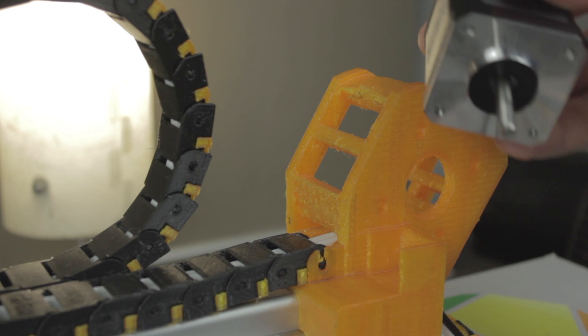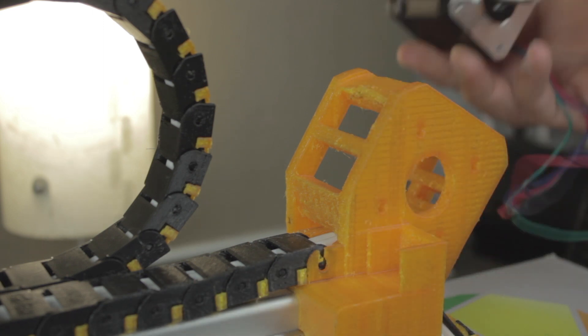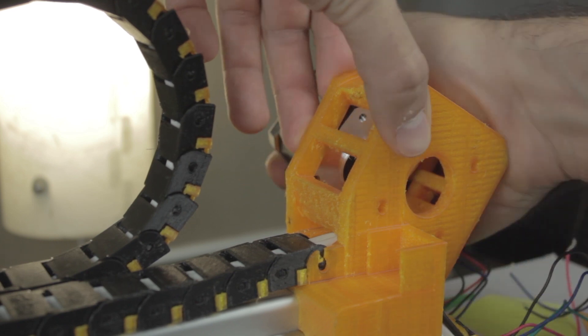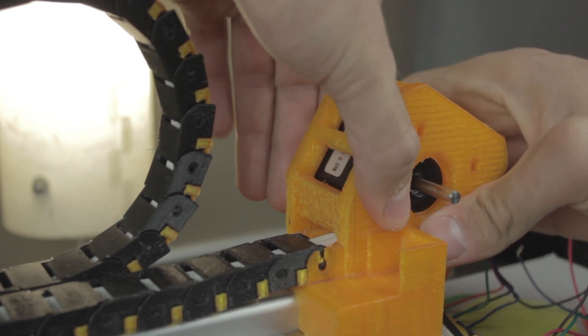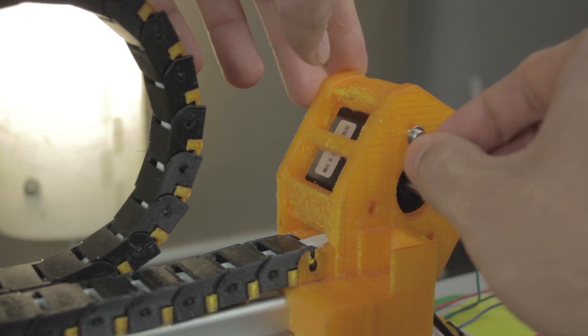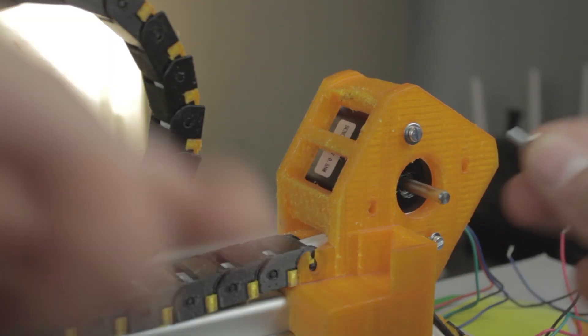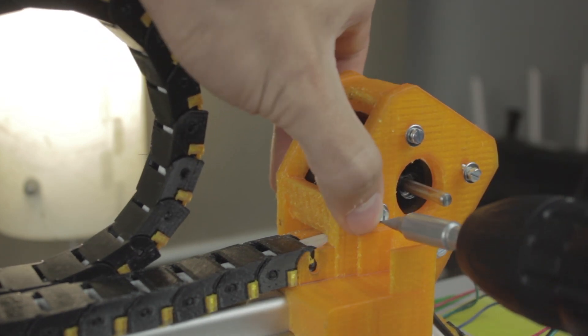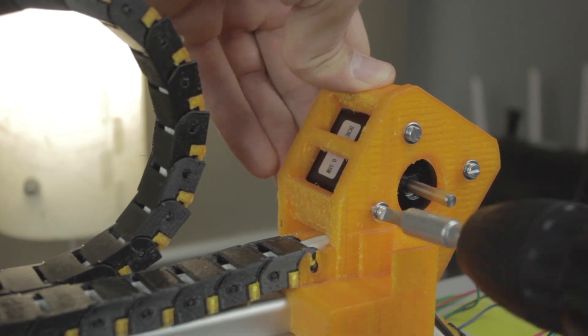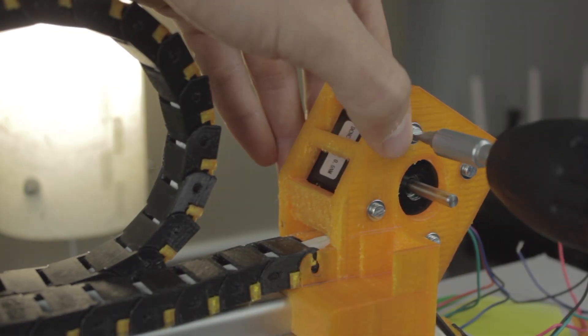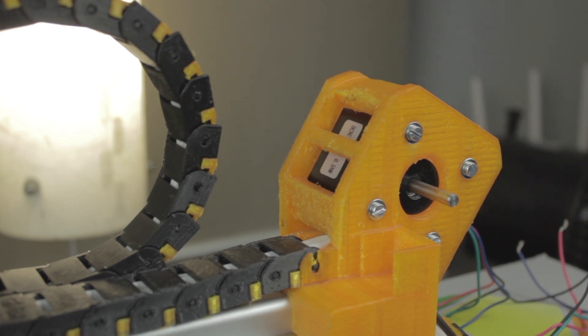So I'm going to start with the right end, and the first step will be to insert the NEMA 17 stepper motor in place. Pay attention to the orientation of the cables, since they should face to the outside bottom of the axis. Then we'll start inserting the M3 bolts with the M3 washers in place, and once all are in, we'll start fastening them in cross order just like so. That was the last one, and as you can see now the stepper motor is strong and stable in place.